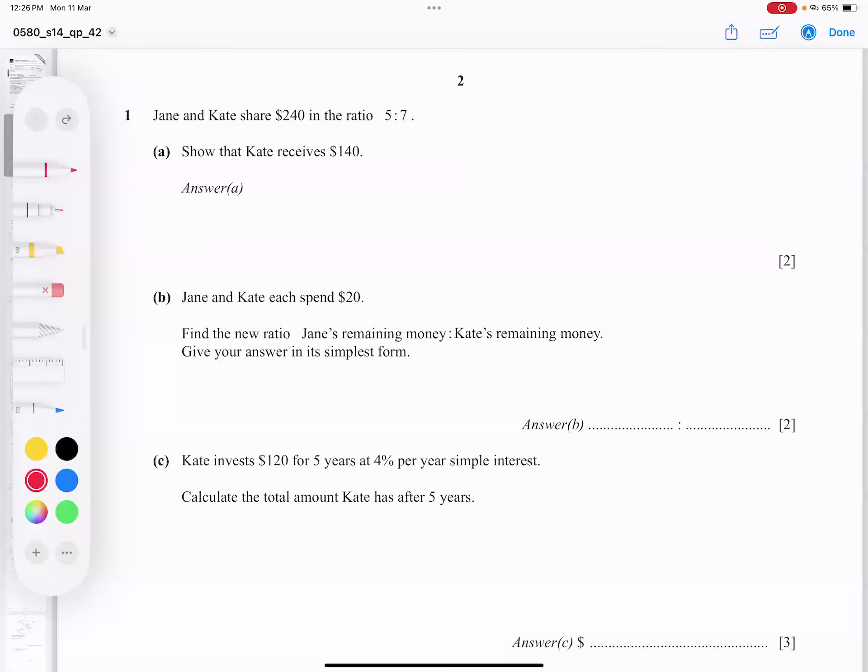There is a question, June 14, variant 42, question number one. So we have an idea here that Jane and Kate shared this much money in 5-7 ratio. We have proved that Kate's amount is this much. So what is the best way? So we write two titles, title number one dollar and title number two is ratio.